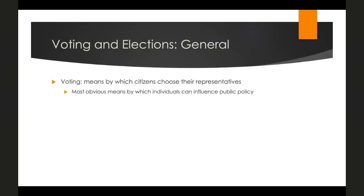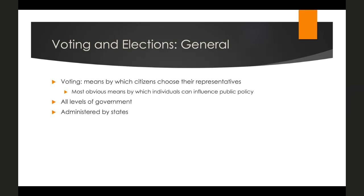Voting is the means by which citizens choose their representatives and other elected officials. This happens at all levels of government — local, state, and federal — and is probably the most obvious means by which individuals can influence public policy. Elections are always administered by the states, which determine what ballots look like, whether they're digital or paper, whether there's vote by mail, and how much early voting is available.